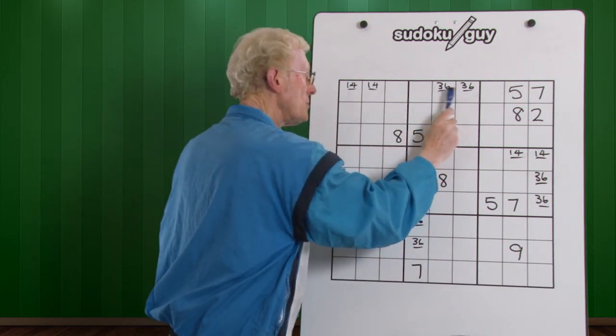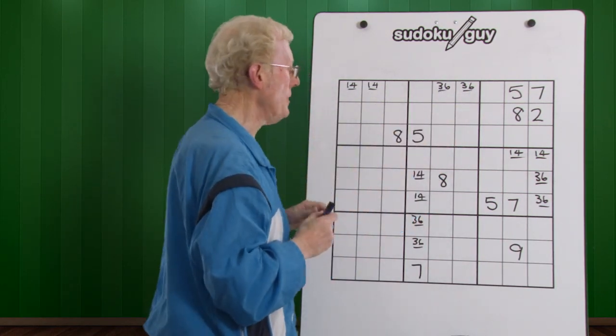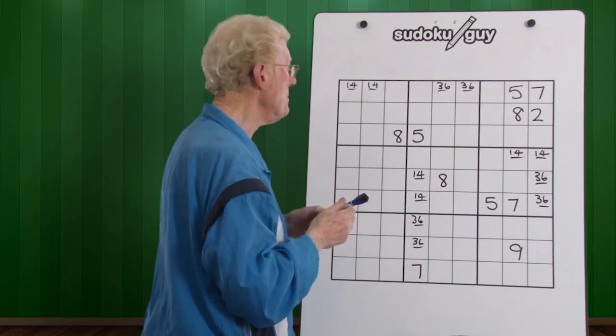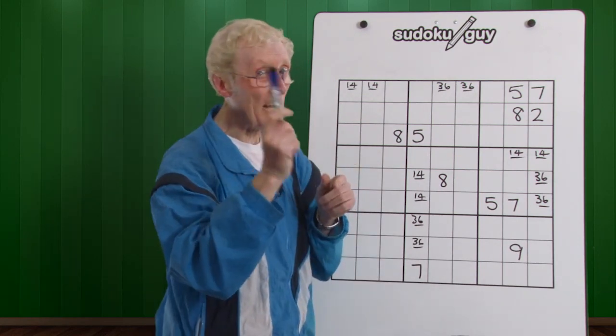We know that this is going to be a one or a four, or a three or a six, or vice versa. So we then say to ourselves, let's count through and find out which numbers are missing. And I'm going to use a different color pen this time.